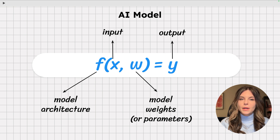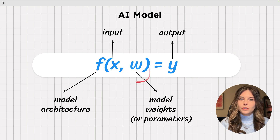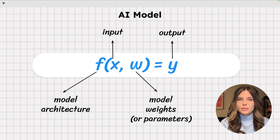It's designed by AI researchers and can be expressed as code, so it's fully understood. W is a set of floating point numbers that are discovered through a process called training. Because they're not easily interpretable by humans, they give AI this aura of mystery. Collectively, f and w make up an AI model.